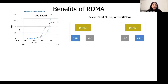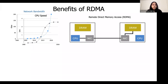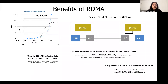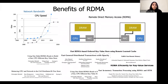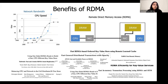RDMA achieves this by providing a standard accelerated interface to access remote memory directly through the network. Following these hardware trends, recent years have seen a plethora of distributed systems work that have been redesigned to utilize RDMA. These include key value stores, distributed transactions, and replicated storage systems.